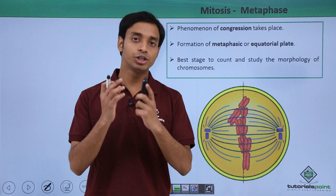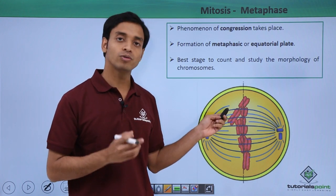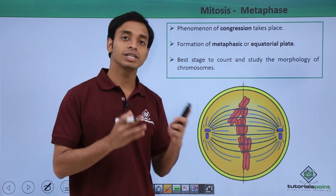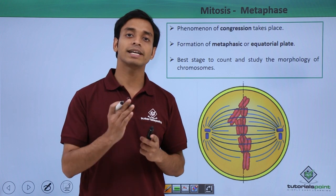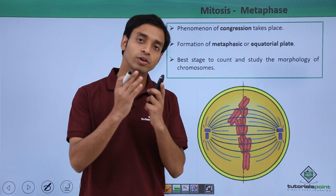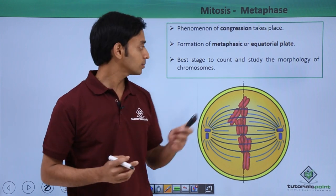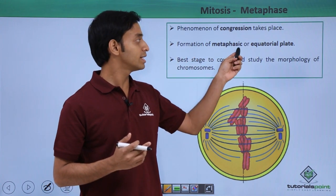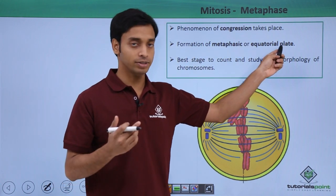Due to this pulling and pushing movement, the chromosomes start aligning themselves at the equatorial plate or equatorial plane of the cell. Because of this, the formation of the metaphasic or the equatorial plate happens.